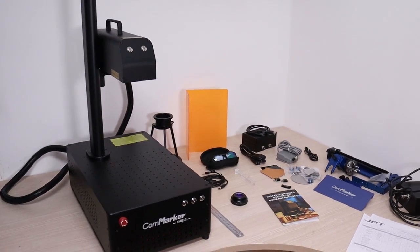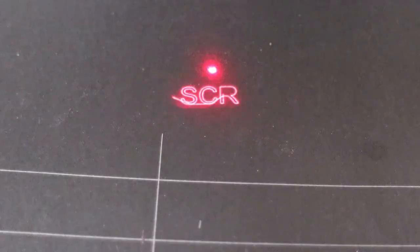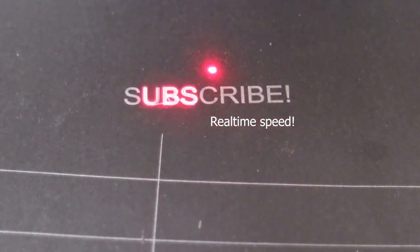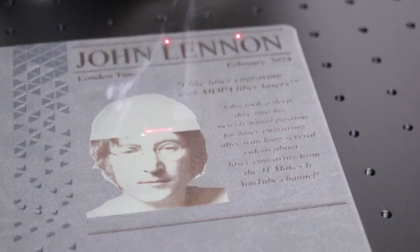This Commarker B4 boasts a 60-watt JPT Mopa fiber laser, known for its quality and versatility. Primarily designed for engraving metals and plastics, the Mopa laser source extends its functionality to various other materials too.